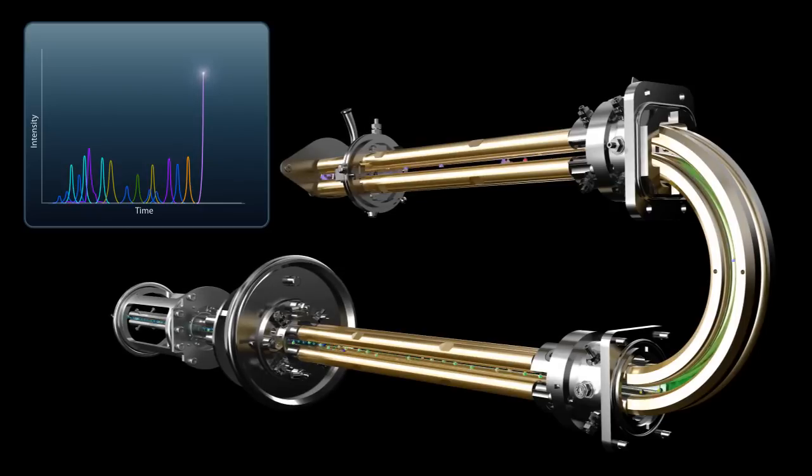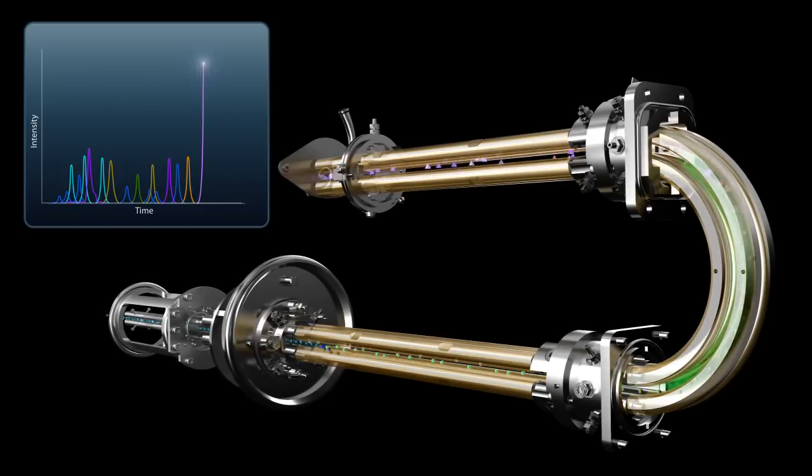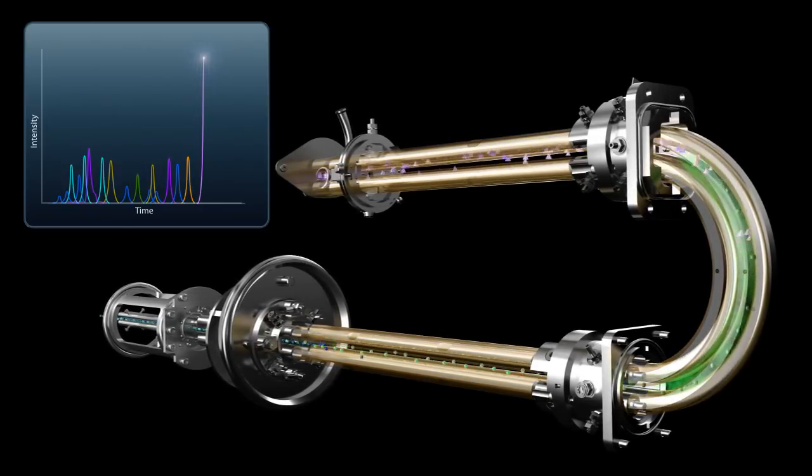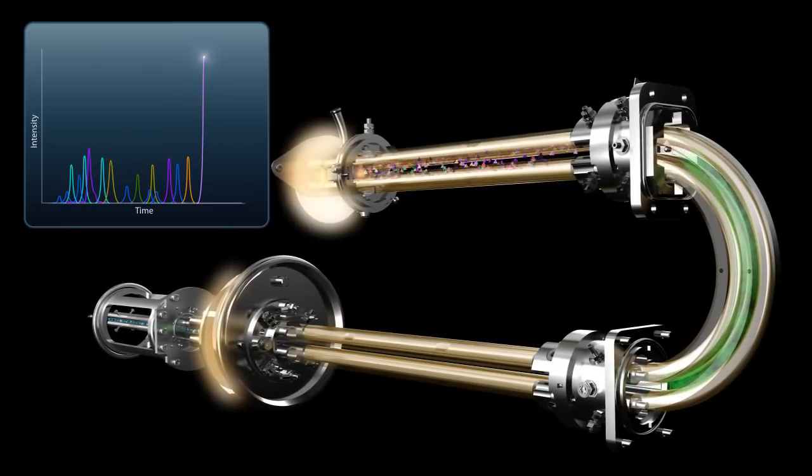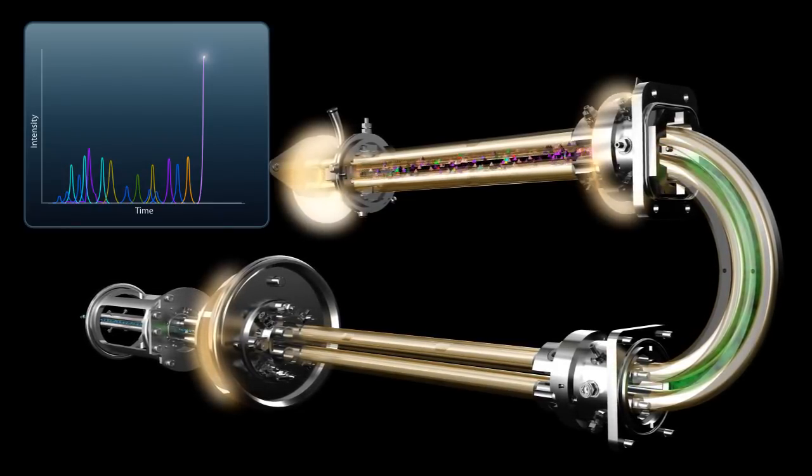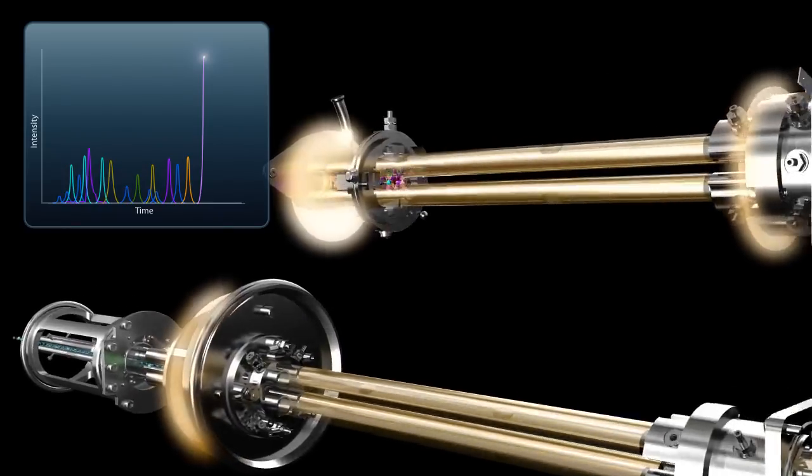But uniquely, when a specific MRM transition is detected, Q3 can automatically switch to linear accelerator trap mode in less than one millisecond to deliver high-sensitivity full-scan MS-MS data.